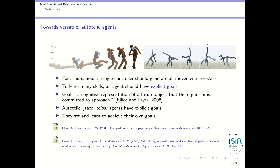So what is a goal? We take this definition from Elliot and Fryer, which is a classical definition. They define a goal as a cognitive representation of a future object that the organism is committed to approach — and all the words are important. This is about a future object, something you want to achieve in the future, and you are committed to approach or eventually escape from that particular future object. In these lessons, we will consider an important class of agents called autotelic agents. Autotelic comes from the Greek auto and telos — it means it sets its own goals. Autotelic agents have explicit goals and they set and learn to achieve their own goals.